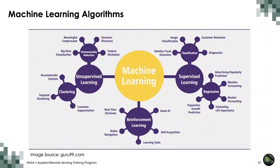The second category is unsupervised learning. In this category, algorithms are not given a particular target to predict. Rather, the algorithm's task is to learn the natural structure and identify patterns or trends in the dataset without being told what structure to look for — the model looks for patterns in unlabeled data. A third category, reinforcement learning, is not commonly used in Earth science. Here, the model trains machines through trial and error to take the best action by establishing a reward system.